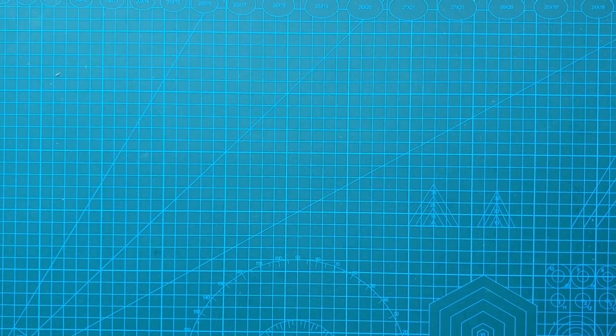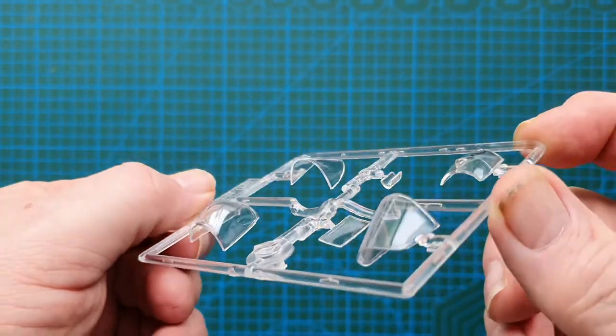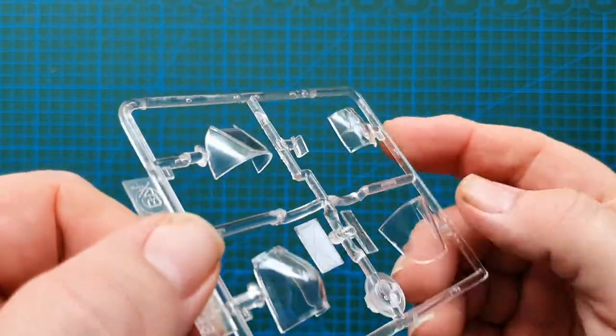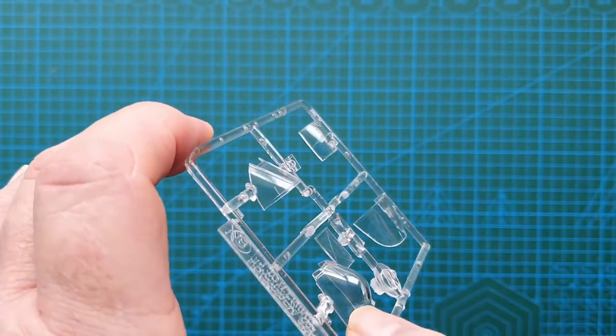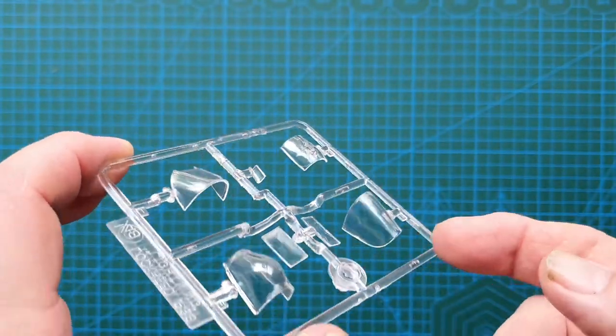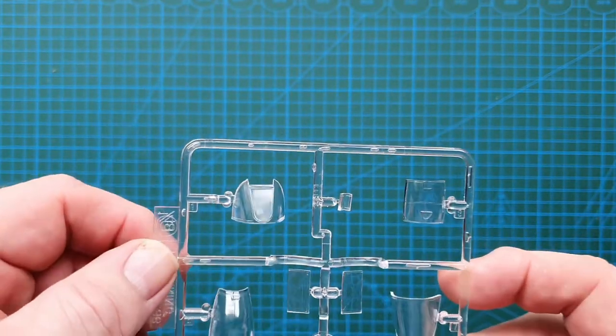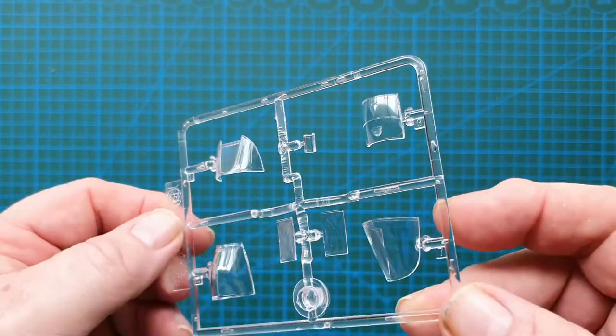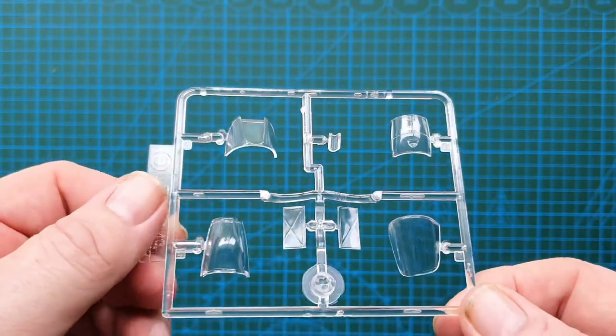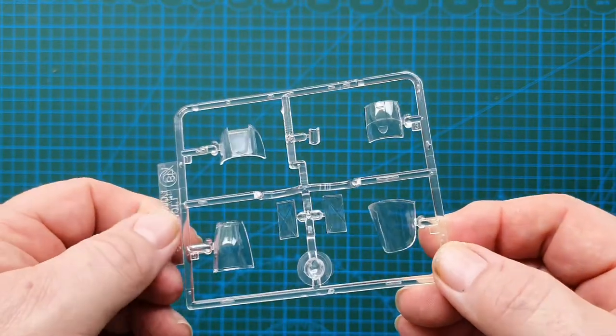Time to have a look at the sprues, and the most important one, the clear parts. So as I said, this is a '96 kit, but from what I can see, they are still clear and fairly sharp. No flash on those, so the register is really good. That's nice for an old kit, because sometimes old kits, they go yellow. This is still nicely clear, I love it.